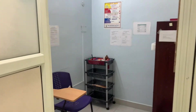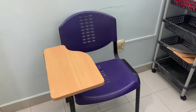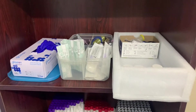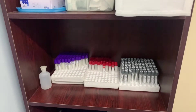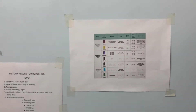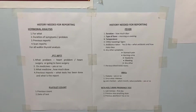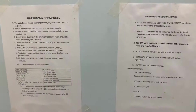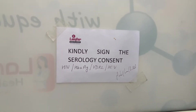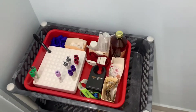If you see, this is the phlebotomy room. Once you enter, you see a phlebotomy chair — exclusive phlebotomy chairs are available, or a chair with an armrest is enough. This is a phlebotomy room rack in which all the test tubes, gloves, and supplies are arranged properly. Apart from this, these are some posters we have in our phlebotomy room showing what tests go in which test tube, history for the pathologist to report, and for which tests a consent form is necessary — like HIV, HBsAg, VDRL, and HCV. These are serology tests and a consent form must be present in the phlebotomy room.